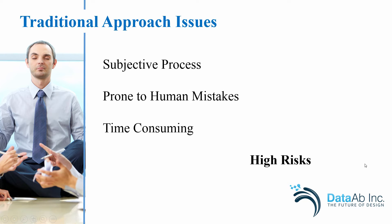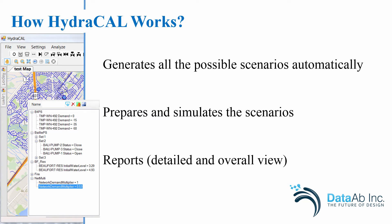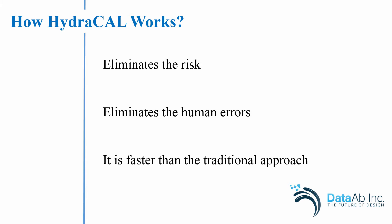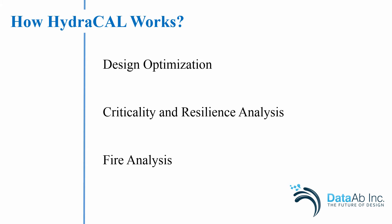Let's see how HydraCal could help water utility planners and designers to overcome these issues and decrease the risks imposed by them to the system. In general, HydraCal is a water distribution system simulator that allows you to simulate your network. What makes it different from the rest is its ability in generating a full range of system operational scenarios automatically, evaluating them, and finally reporting their results in a way that makes decision making for the user easy. In other words, HydraCal eliminates design risks, minimizes human mistakes, and saves time. It also includes several modules that help to optimize your design, evaluate system resiliency, find critical components, and perform comprehensive fire analysis on your system.